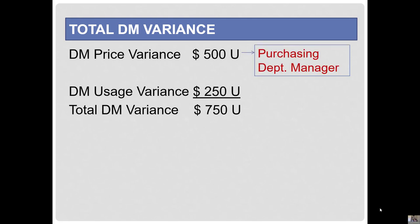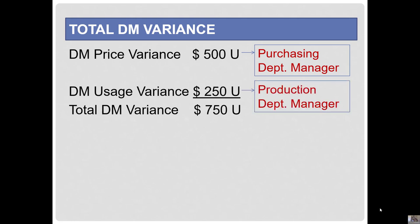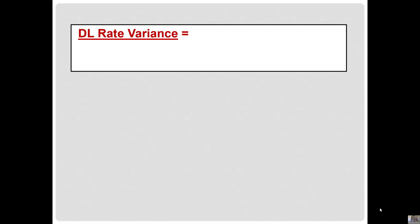Remember, the purchasing department manager will typically be responsible for paying the right price for the right quality of material, and the production manager will be responsible for the efficient usage of that material. Now let's look at our labor variances.